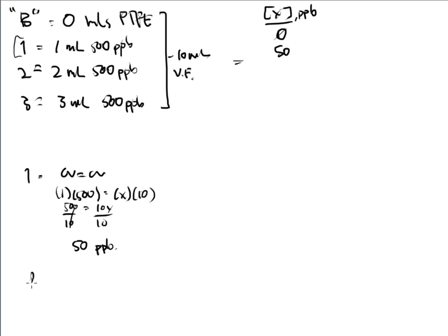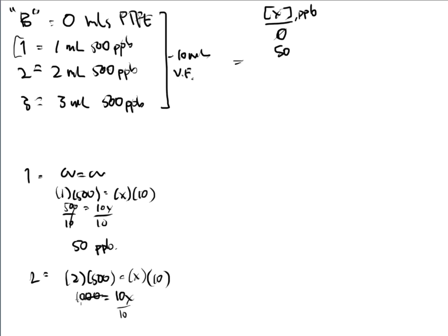For number two, I took two milliliters of 500 ppb and diluted to 10 milliliters with sample. So: 2 × 500 = 1000, and 1000 = 10 × X. Divide by 10 and X equals 100. My second flask is 100 ppb.